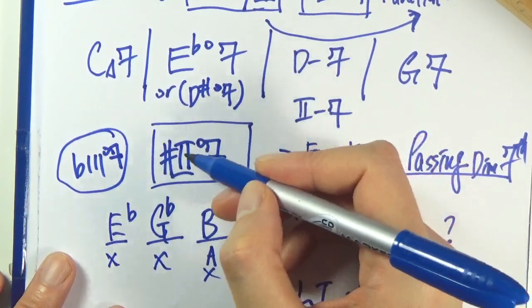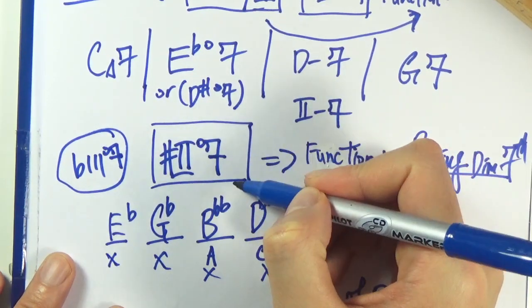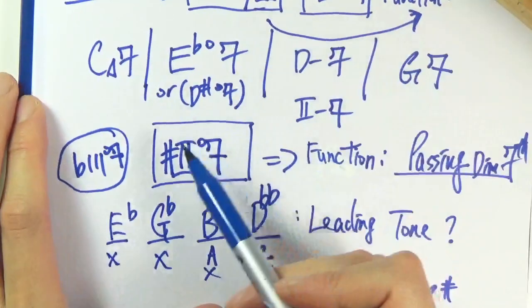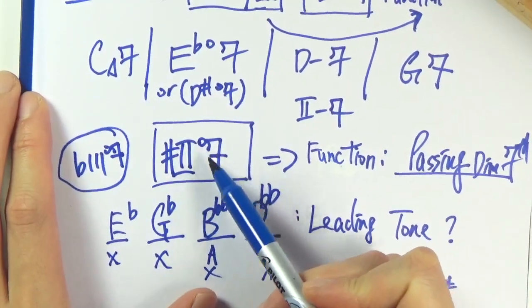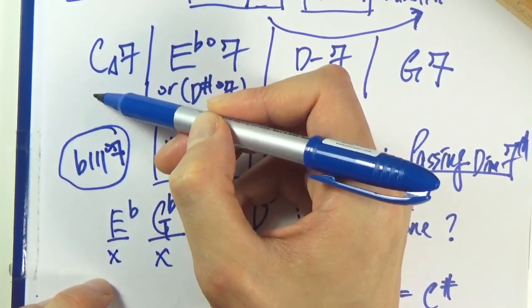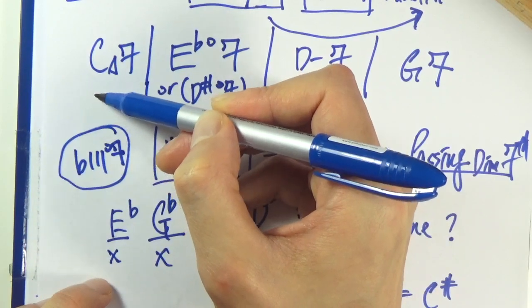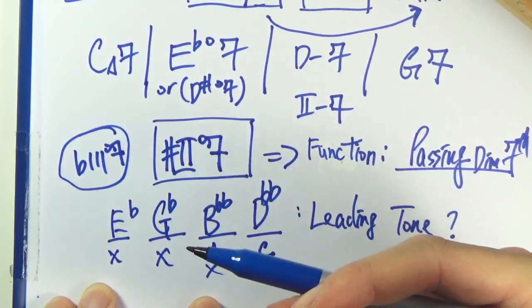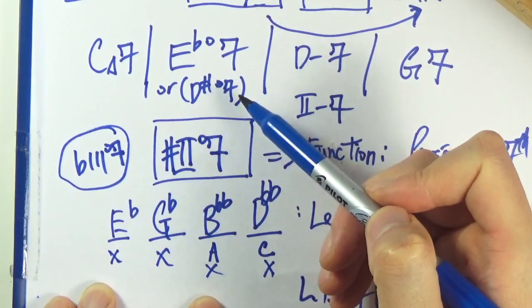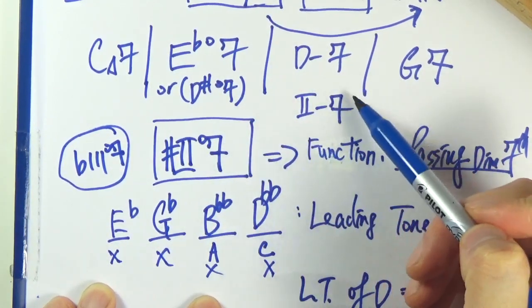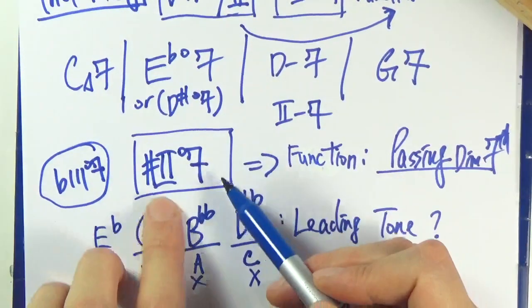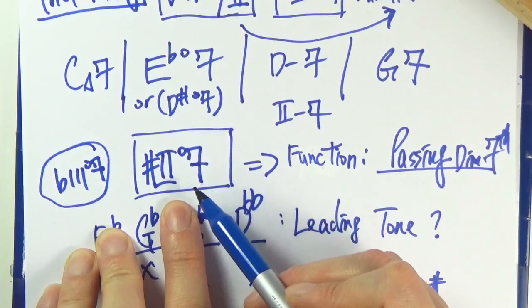Oh, I forgot. So sharp 2 diminished 7 of, no, sorry, I didn't forget anything. This one is correct. So it will be analyzed as a sharp 2 diminished 7 because it's the sharp 2 with respect to C being the root of the scale. So C and then you have sharp 2, which is D sharp or E flat, going into a 2 minor 7. So in this case, you see, I don't have slash of something because this chord here is just a passing chord.